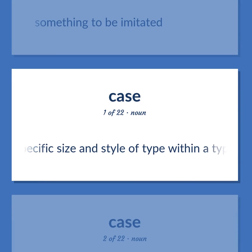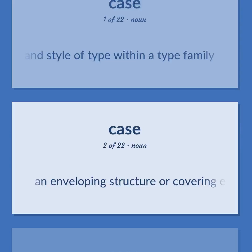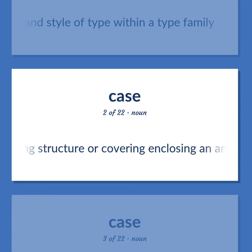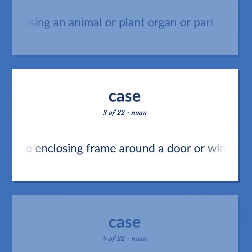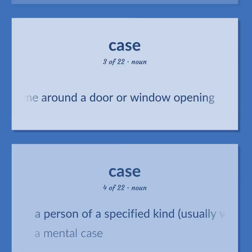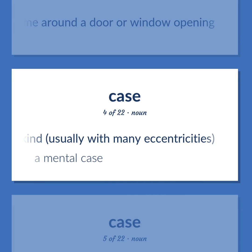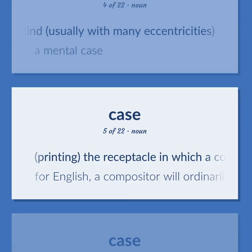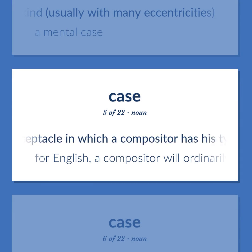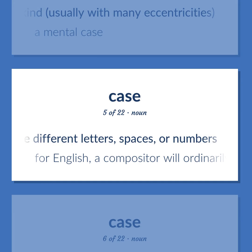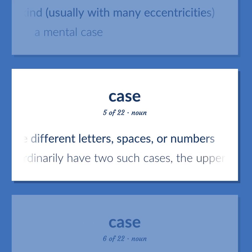Case: a specific size and style of type within a type family. An enveloping structure or covering enclosing an animal or plant organ or part. The enclosing frame around a door or window opening. A person of a specified kind, usually with many eccentricities — 'A mental case.' Printing: the receptacle in which a compositor has his type, divided into compartments for different letters, spaces, or numbers. For English, a compositor will ordinarily have two such cases — the uppercase containing the capitals and the lowercase containing the small letters.